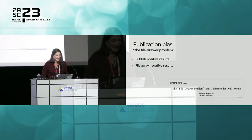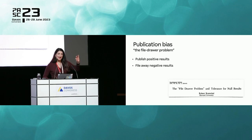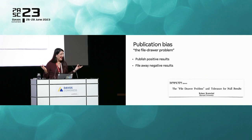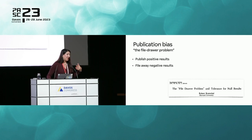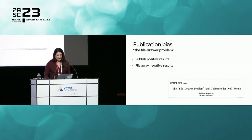Publication bias in the research literature has been most discussed in empirical fields using null hypothesis statistical testing — for example, experimental psychology — where results below the p-value threshold get published, and all the other results that don't reach statistical significance don't see the light of day. This manifests in only positive results ending up in the scholarly literature.